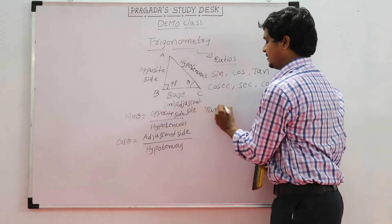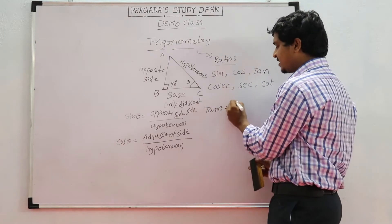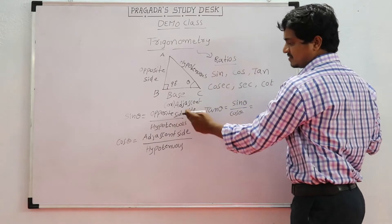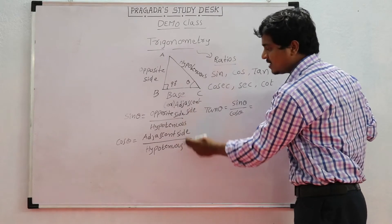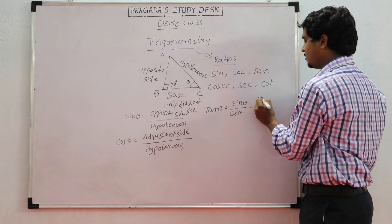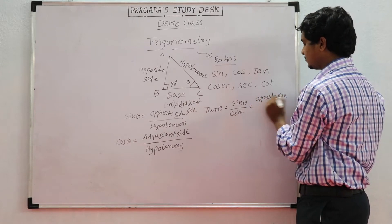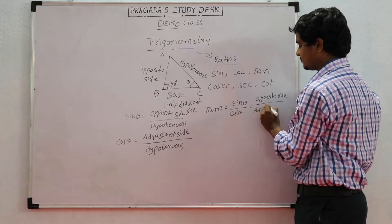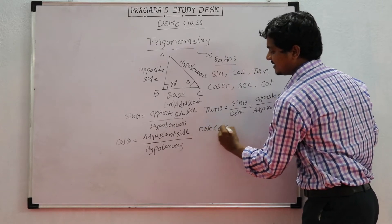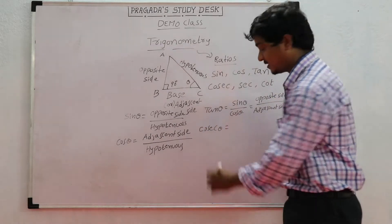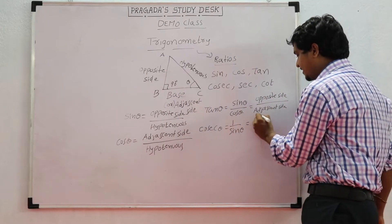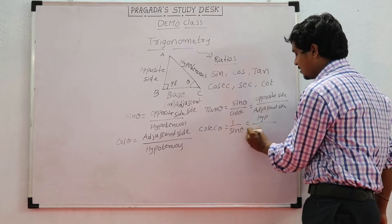Cos theta is adjacent side divided by hypotenuse. Tan theta, in terms of ratios, is sin theta divided by cos theta. In terms of sides, when you divide sin theta by cos theta, the hypotenuse cancels and you get opposite side divided by adjacent side. Cosecant theta is the reciprocal of sin theta, which gives hypotenuse divided by opposite side.